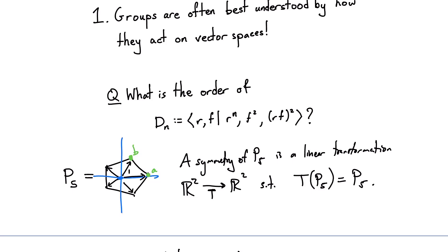Why is that? Because this linear transformation, in order to be a symmetry of P_5, will have to send vertices to vertices, and so it sends this basis of vectors of length one to another basis of vectors of length one. As a result, it'll preserve the lengths of all vectors. In particular, it has to preserve the length of the vector b minus a. That vector has some length, and that length has to be preserved. So I know a and b have to get sent to vertices, and a minus b has to get sent to a vector of the same length. That means wherever a goes, b has to be adjacent. If a went to one vertex and b stayed far away, then a minus b would have grown too large. So T has to be an invertible linear transformation that preserves lengths and sends a and b to two adjacent vertices.